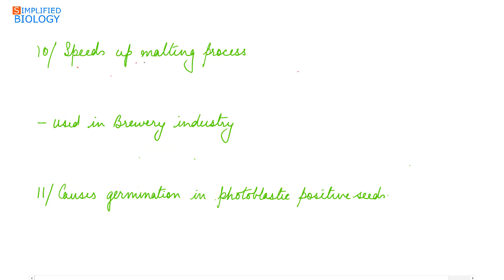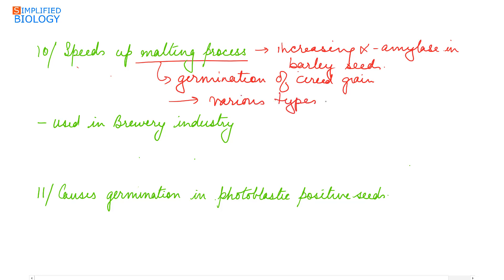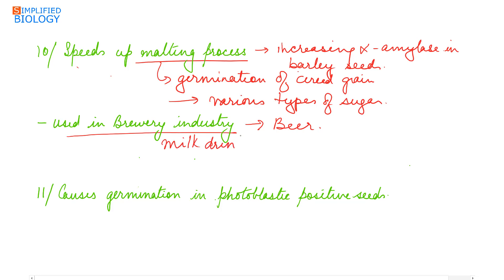Gibberellins speed up the malting process by increasing alpha amylase in germinating barley seeds. Malting means germination of cereal grains so that the starch present in the grain gets converted into various types of sugars. The malt formed is used in the brewery industry, that is the beer industry, and also in various milk drinks like Horlicks and Maltova.